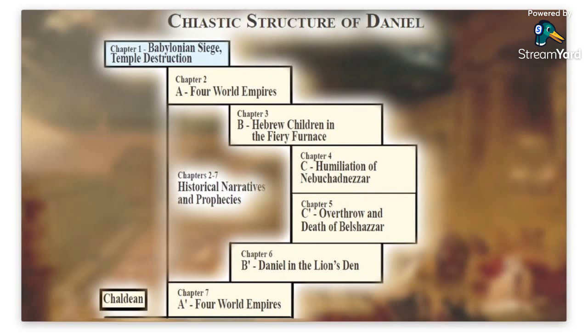The entire book of Daniel is actually arranged in chiastic structure. In chapter one we have the Babylonian siege and destruction of the temple. Then chapter two (A) has four world empires, and chapter seven is also A — four world empires. In chapter three (B) we have the Hebrew children in the fiery furnace, and chapter six (B) is Daniel in the lion's den. Chapter four is the humiliation of Nebuchadnezzar, and chapter five is the overthrow and death of Nebuchadnezzar's grandson Belshazzar. Chapters two through seven are historical narratives and prophecies written in the Chaldean language.